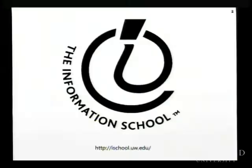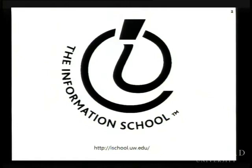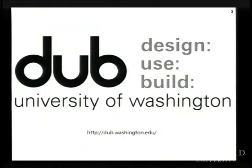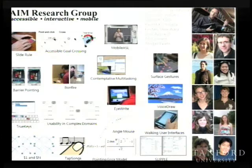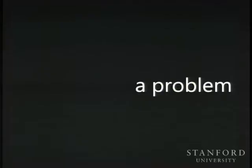I am a professor in the information school at the University of Washington, and that's part of the larger DUB group — a consortium of HCI and design departments. The iSchool is very much part of that, along with computer science, human-centered design and engineering, and the design division within the School of Art. I run the AIM research group — the name is a pun, but it stands for Accessible, Interactive, and Mobile. A lot of the work I'm talking about today spans multiple papers and projects, and my grad students and postdocs deserve a lot of credit.